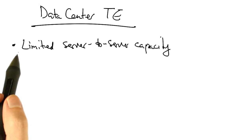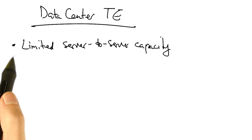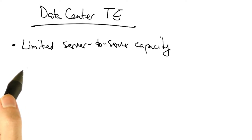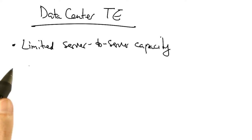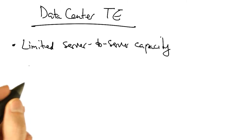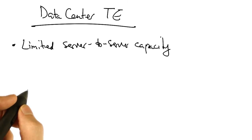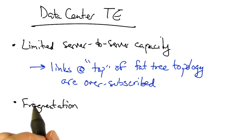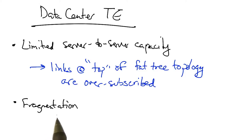We saw in the last lesson how existing data center topologies provide extremely limited server-to-server capacity because of the oversubscription of the links at the top of the hierarchy. Additionally, as services continue to be migrated to different parts of the data center, resources can be fragmented, significantly lowering utilization.